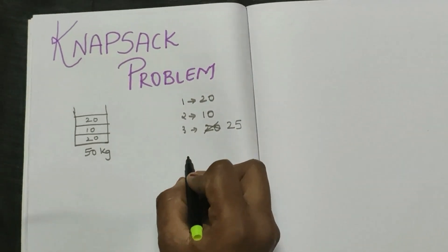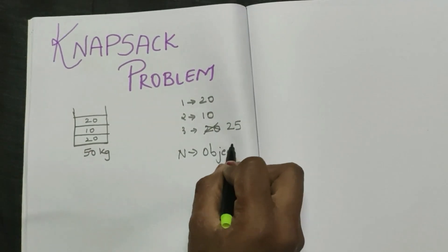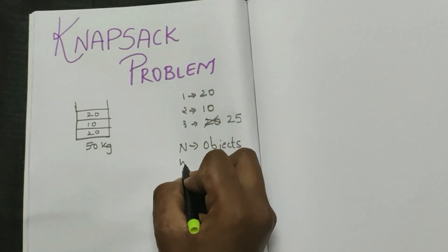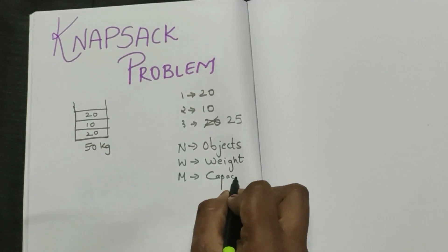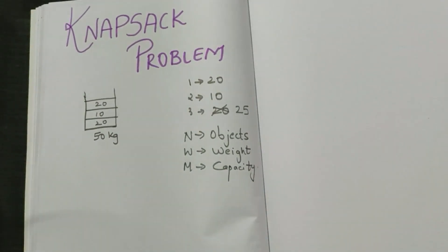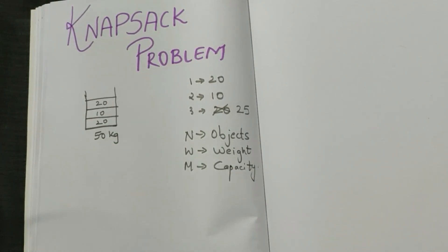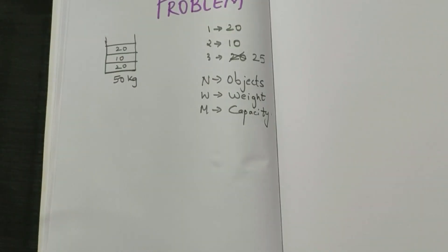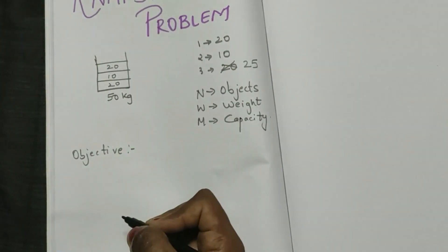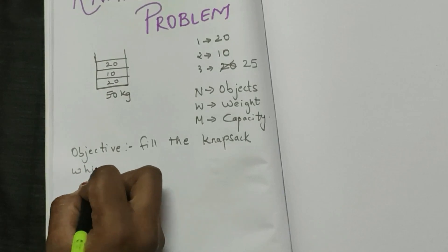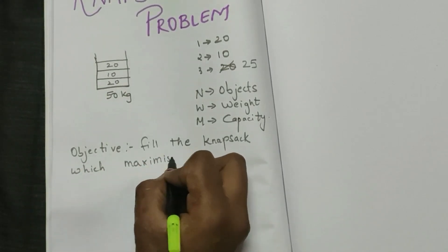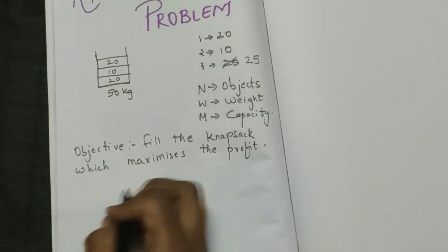Here, n represents the number of objects, w is the weight of each object, m is the capacity of the knapsack, and p is the profit. The objective of the knapsack problem is to fill the knapsack in a way that maximizes the profit.